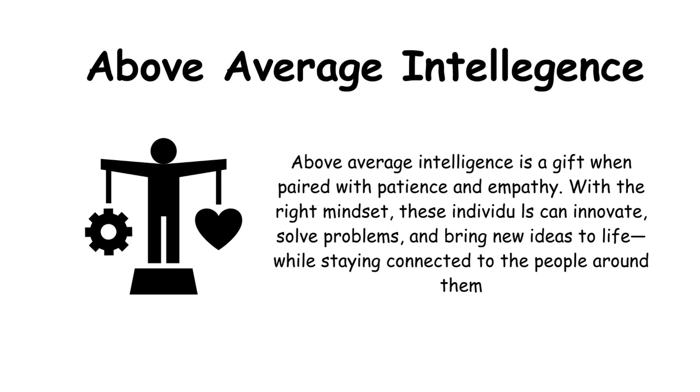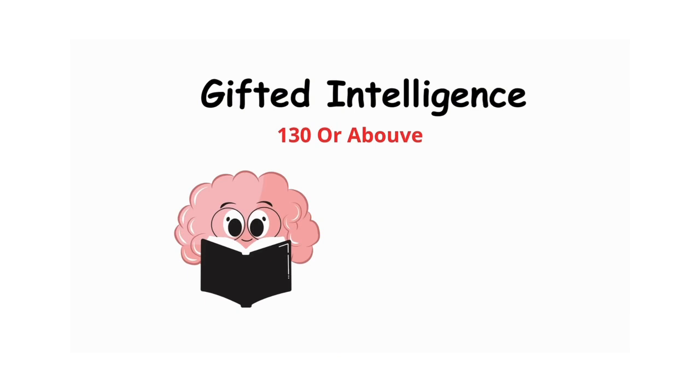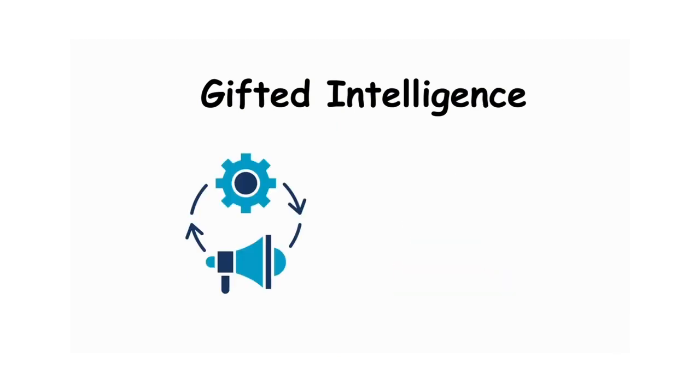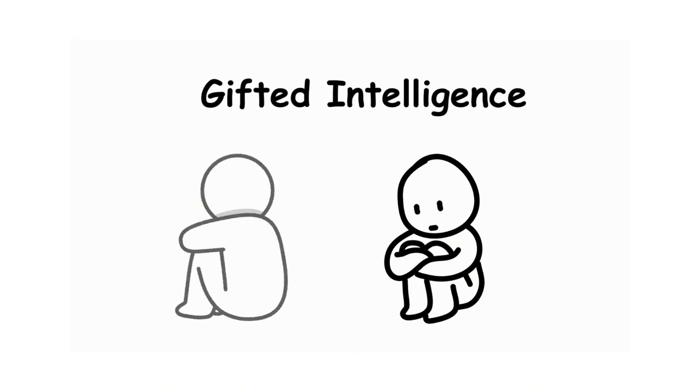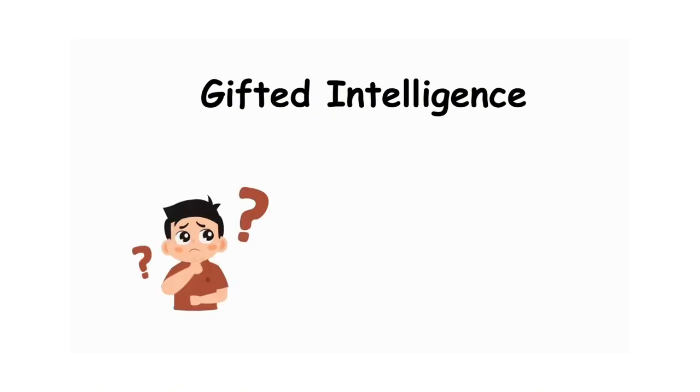Gifted intelligence means having an IQ of 130 or above. People at this level often learn quickly, sometimes effortlessly. While others need repetition, they may understand an idea after hearing it just once. In school, this can make them feel bored or misunderstood because the pace rarely matches their thinking.